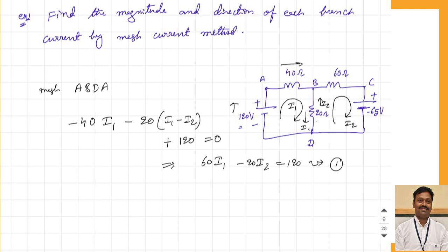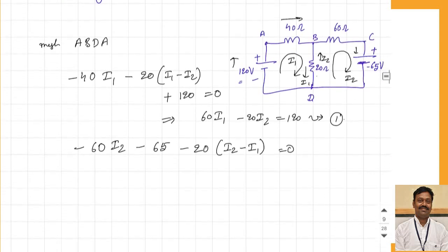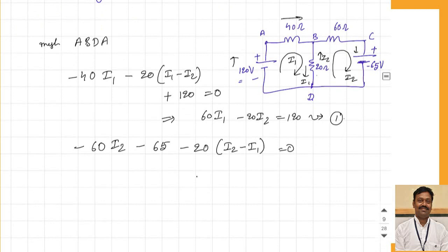Similarly, applying to the second mesh: through the resistance, the current I2 gives a voltage drop. Moving from plus to minus through the EMF, this becomes minus 65. Then through the 20 ohm resistance, the current in the direction of I2 is I2 minus I1, so it becomes minus 20 times (I2 minus I1), equal to zero. Simplifying: minus 20 times I1 plus 80 times I2 equals minus 65. This is equation number 2.